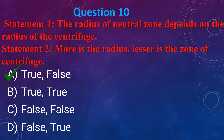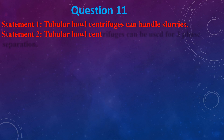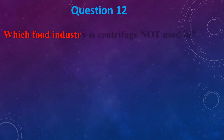Statement 1: A tubular bowl centrifuge can handle slurry. Statement 2: A tubular bowl centrifuge can be used for three-phase separation. (a) True, False (b) True, True (c) False, False (d) False, True. The answer is (c) both statements are false.